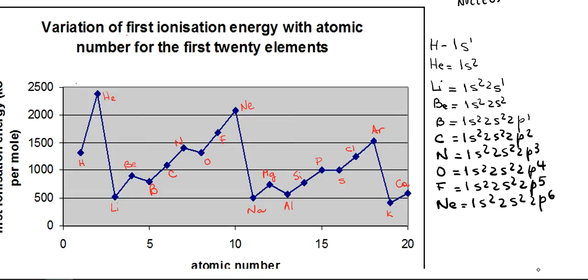One of the most important concepts that you need for your exam is how the first ionization energy varies with the atomic number. So we are going to analyze that in this graph that shows the first ionization energy for the first 20 elements in the periodic table.